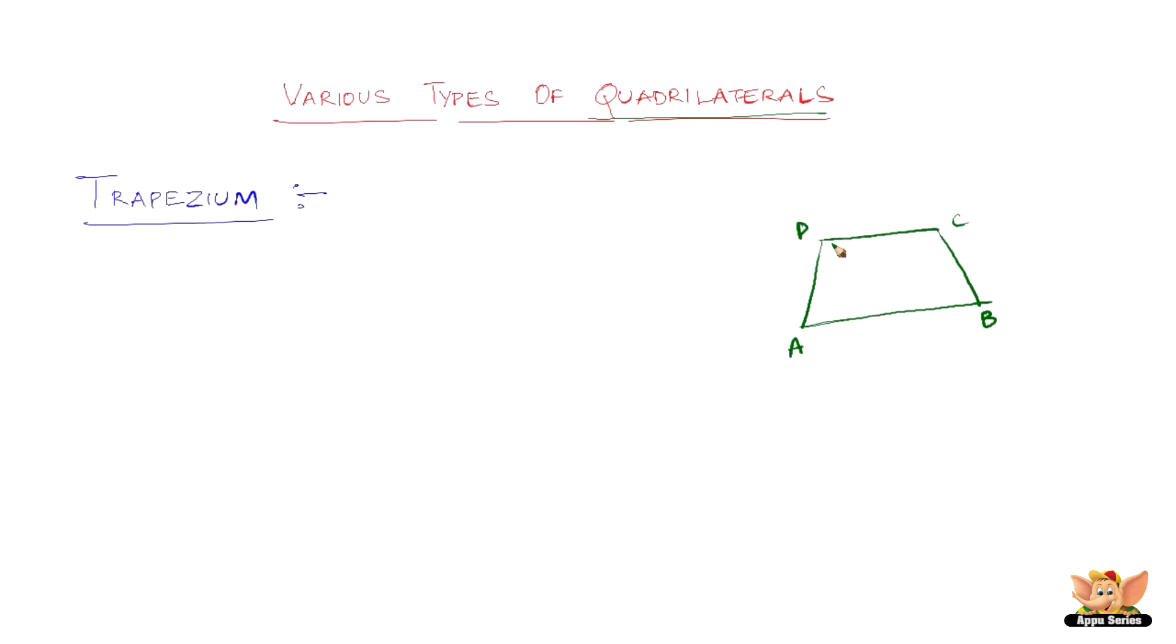Now why did I draw this line a little longer than this? Why can't I draw another line which is parallel to this line and then join? But it clearly says a quadrilateral having exactly one pair of parallel sides is called a trapezium.